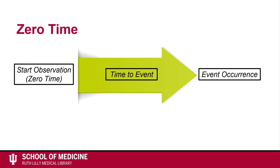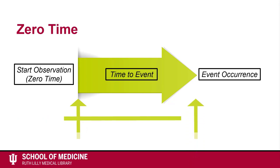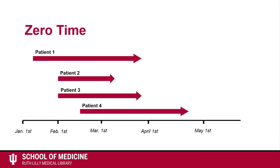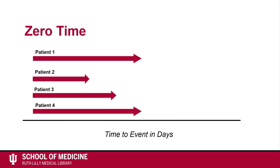Zero time is the start of the observation period for each patient. When a patient experiences an event, it is calculated as time from zero time. This allows time to event to be compared between patients in the study cohort, regardless of when patients enter the study.